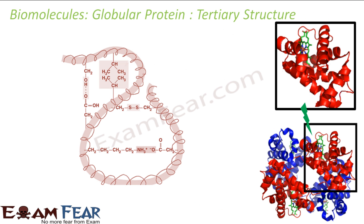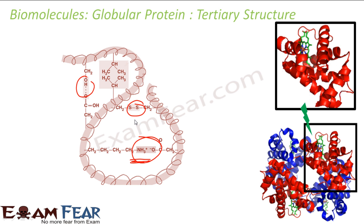Once we have the secondary structure, it is further folded to give the tertiary structure. The forces that stabilize tertiary structure are hydrogen bonding, disulfide bonds, Van der Waals forces of attraction, and electrostatic forces — sometimes there is a covalent bond itself. These forces cause the helix or beta-pleated chain to twist and turn into a different three-dimensional shape, called the tertiary structure.